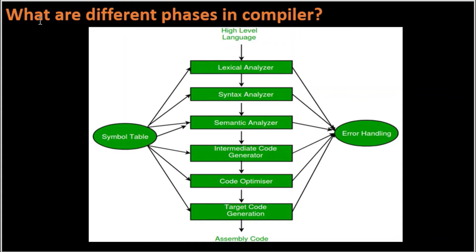The first question is: what are the different phases in a compiler? In a compiler, we have the lexical analyzer, syntax analyzer, semantic analyzer, intermediate code generator, code optimizer, and target code generation. Apart from this, we have the symbol table and error handling.